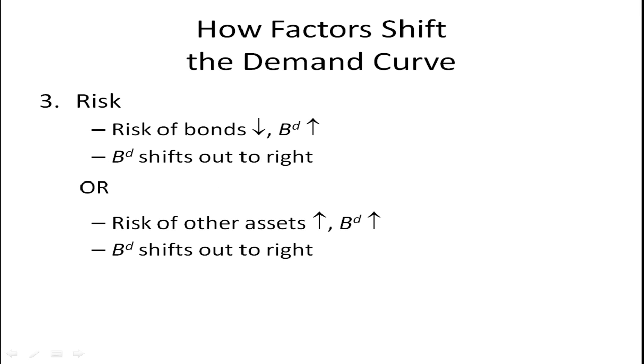Risk. If the risk of bonds goes down, then there will be greater demand. Makes sense, less risky, people will be more comfortable buying bonds. That will shift the demand curve out to the right. If the risk of other assets goes up, people will run to bonds. That will increase the demand for bonds and the demand curve for bonds will shift out to the right.